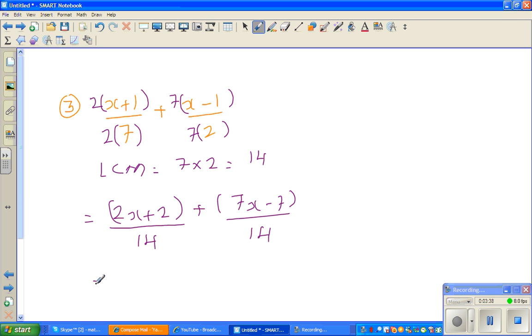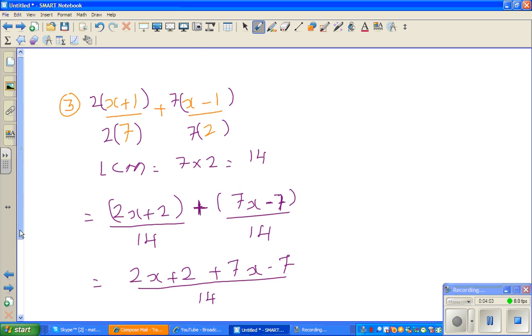So you can add the numerator. So this is 2x plus 2 plus 7x minus 7 over 14. Now here as it is plus, generally you will get it right. Because plus 7x remains plus 7x and minus 7 remains minus 7. But whenever you have a minus here, you have to be super careful, extra careful when opening the brackets.